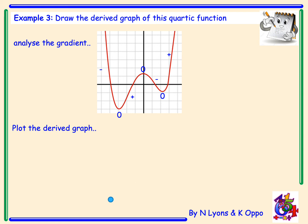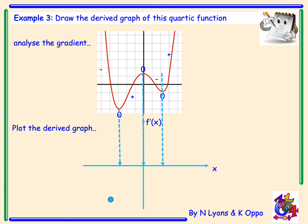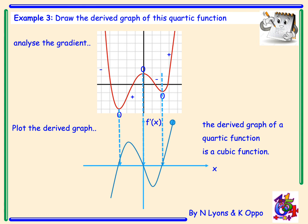Plotting the derived graph directly underneath, labelled f'(x) and x: the stationary points become roots of the derived function — that's where the derived graph cuts the x-axis. Negative is below the x-axis, positive is above. So the graph goes below, cuts the x-axis, above, cuts again, below, cuts again, and above — following the path of a cubic. The derived graph of a quartic function (x to the power 4) is a cubic function (x to the power 3).